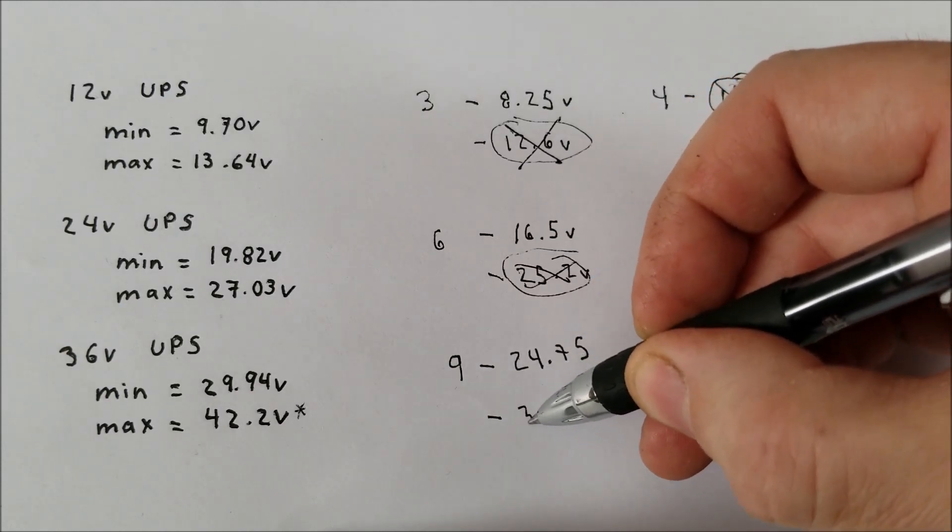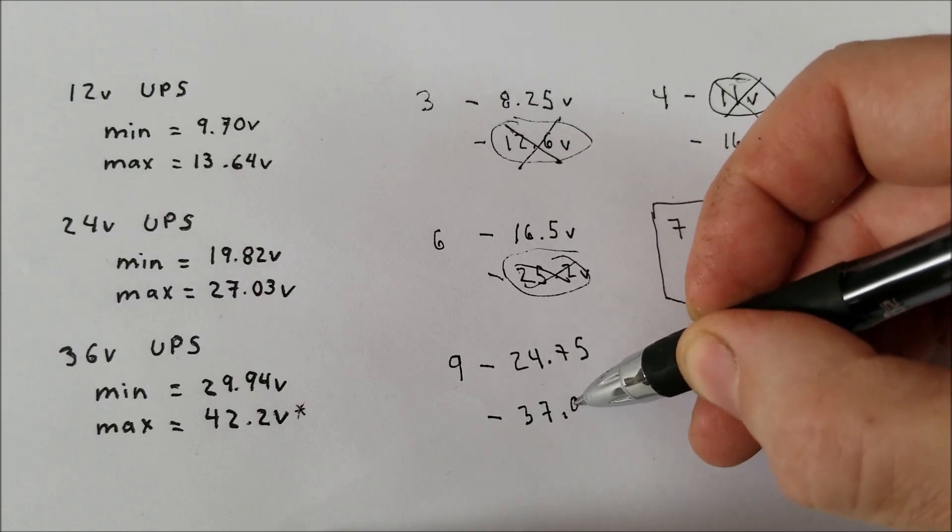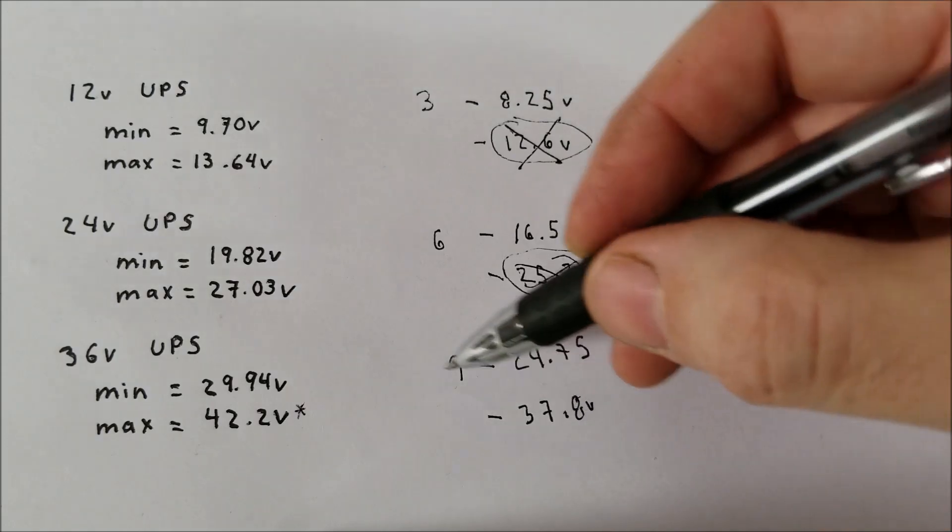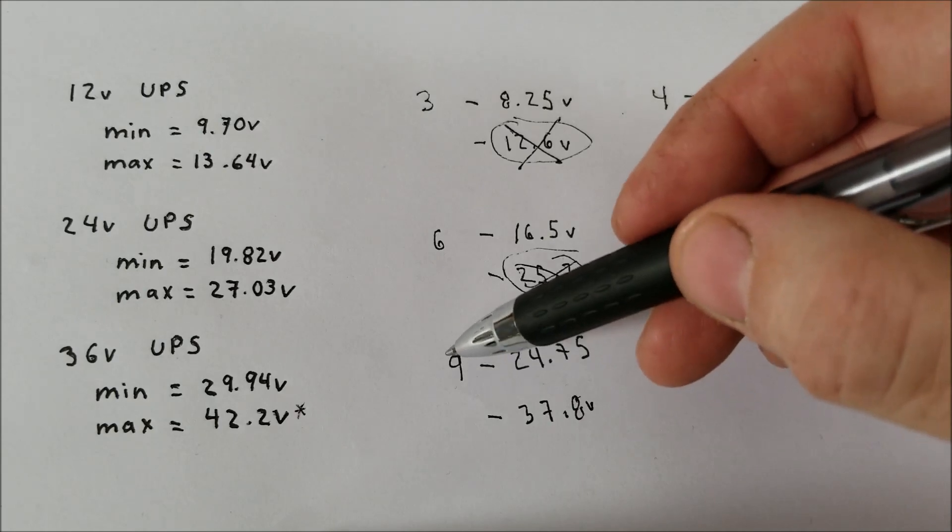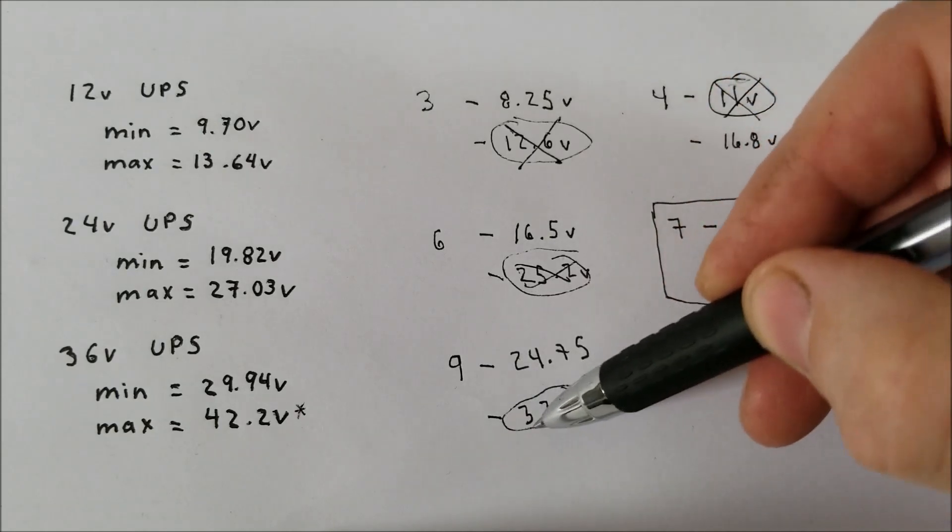We get 37.8V, which is lower than the maximum of the UPS sees. So here, again, this does not work.